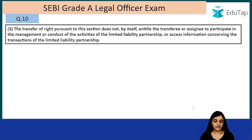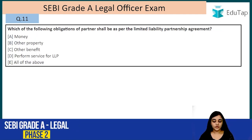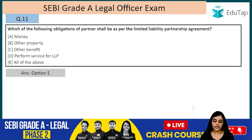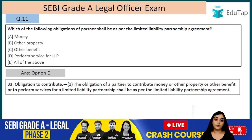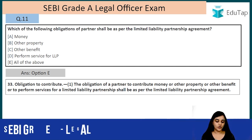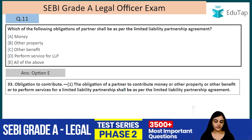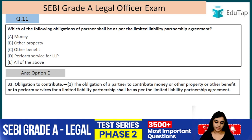Question number eleven: which of the following obligations of the partners shall be as per the limited liability partnership agreement? The answer is E — all of the above. The obligation of a partner to contribute money, other property, other benefits, or to perform service for a limited liability partnership shall be as per the LLP agreement.